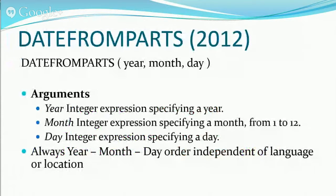What each of these does is allow you to take independent components that make up a date — year, month, day — or for datetime, year, month, day, hours, minutes, seconds — and turn those into a proper date object.